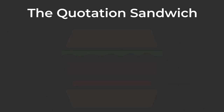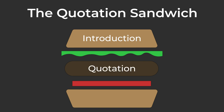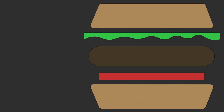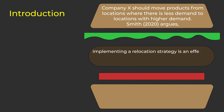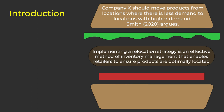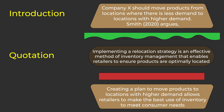The quotation sandwich. Some teachers use a sandwich model to describe how we should structure quotations. First, an introduction in your words. Then the quotation to support the point. And finally, a conclusion in your own words to comment on the point. Here's a quotation sandwich: "Company X should move products from locations where there is less demand to locations with higher demand" — that's the introduction. Smith (2020) argues, "Implementing a relocation strategy is an effective method of inventory management that enables retailers to ensure products are optimally located" — that's the quotation. "Creating a plan to move products to locations with higher demand allows retailers to make the best use of their inventory to meet consumer needs" — and that was the conclusion.